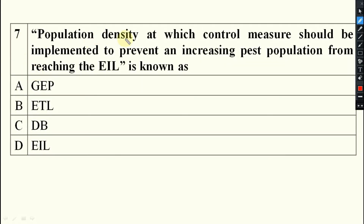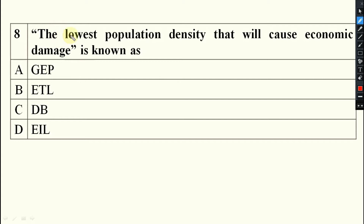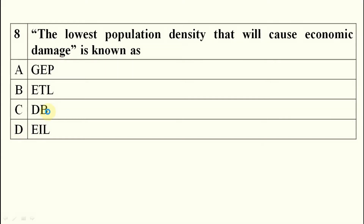Population density at which control measures should be initiated or implemented — this is definitely ETL, the Economic Threshold Level, otherwise known as action threshold. The lowest population density that will cause economic damage is known as EIL — Economic Injury Level.